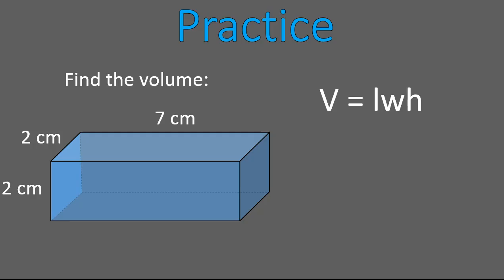Were you able to successfully multiply seven times two times two and get 28 cubic centimeters? Seven times two is 14. 14 times two is 28. 28 cubic centimeters will be the volume of this rectangular prism.